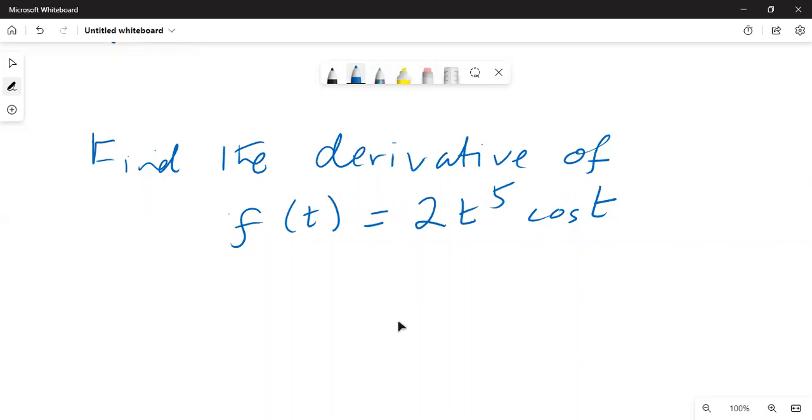This is the problem: Find the derivative of f of t equals 2 multiplied by t to the power of 5 times cosine of t.